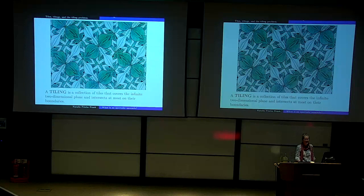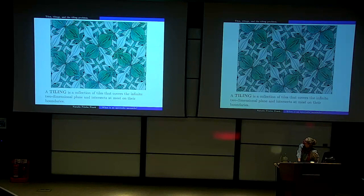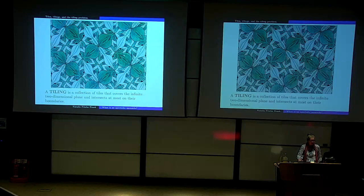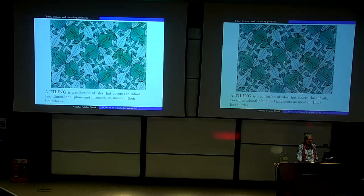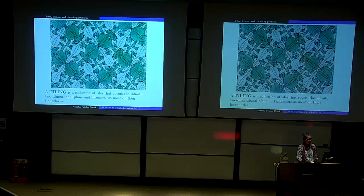A tiling is a collection of tiles that covers the plane with no gaps, where the tiles themselves intersect only on their boundaries. Here's an example — an Escher tiling. There are two kinds of tiles: a sort of frog and a sort of lizard, and their little legs interlock. You could continue this pattern indefinitely to cover the entire plane. This is a periodic tiling — you could slide the whole tiling by a translation vector and it would look exactly the same.